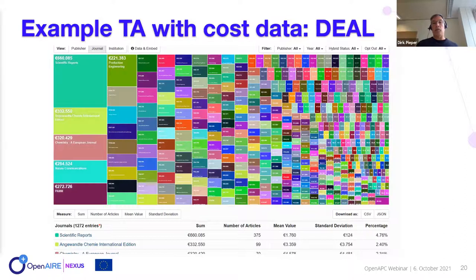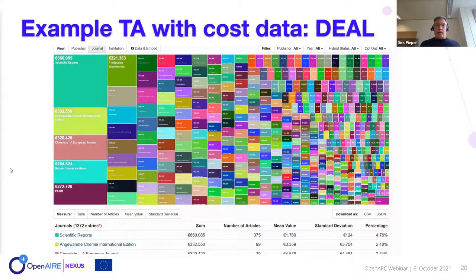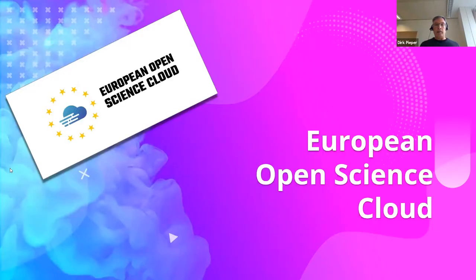Other library consortia should think about how they can provide cost data for their articles within transformative agreements — it is possible within Open APC to report this kind of information. I will now hand over to Andreas for the integration of Open APC in OpenAIRE and the European Open Science Cloud.